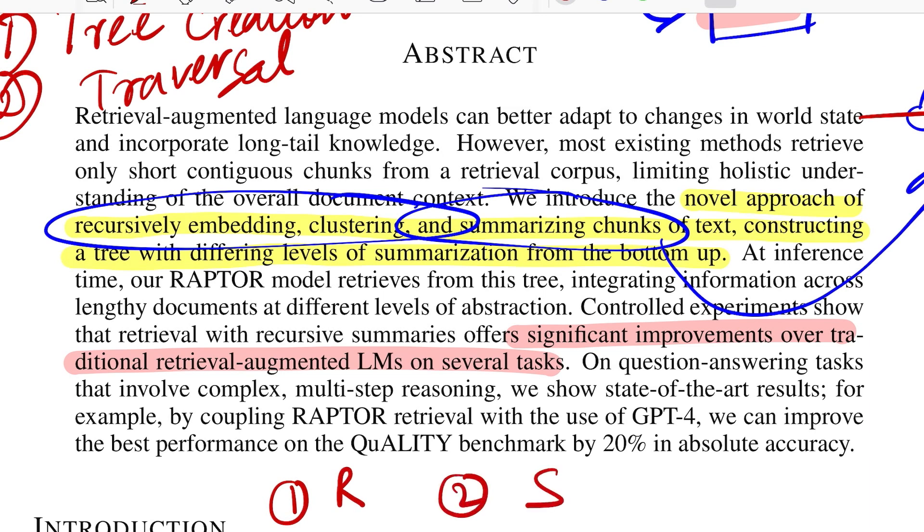So instead of just choosing chunk strategy to be let's say sentences or contiguous 100-200 words, rather if you choose to represent your document as the tree structure that they are suggesting, you'll have significant improvement in your entire RAG pipeline.